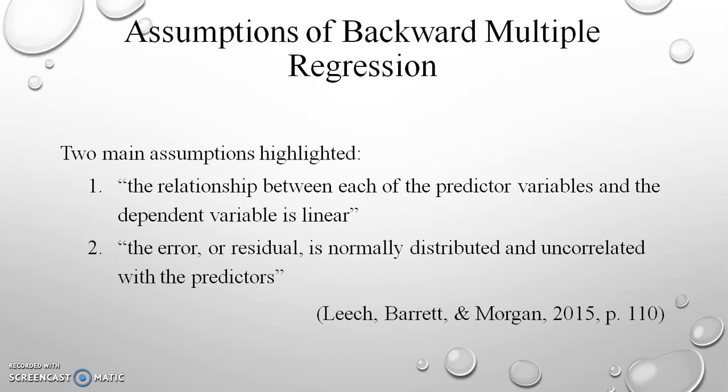There are two assumptions associated with multiple regression. The first is that the relationship between each of the predictor variables and the dependent variable is linear. The second is that the error or residual is normally distributed and uncorrelated with the predictors.